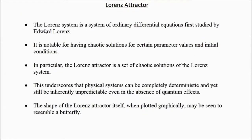Lorenz system is a system of ordinary differential equations first studied by Edward Lorenz. It is notable for having chaotic solutions for certain parameter values and initial conditions. In particular, the Lorenz attractor is a set of chaotic solutions of the Lorenz system. This is the Lorenz system.